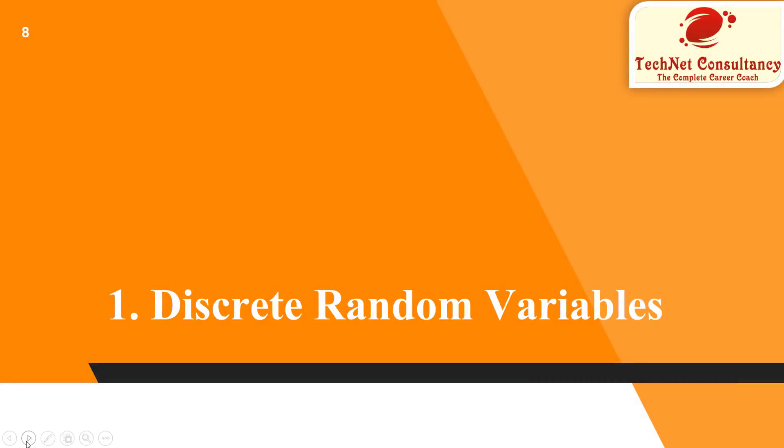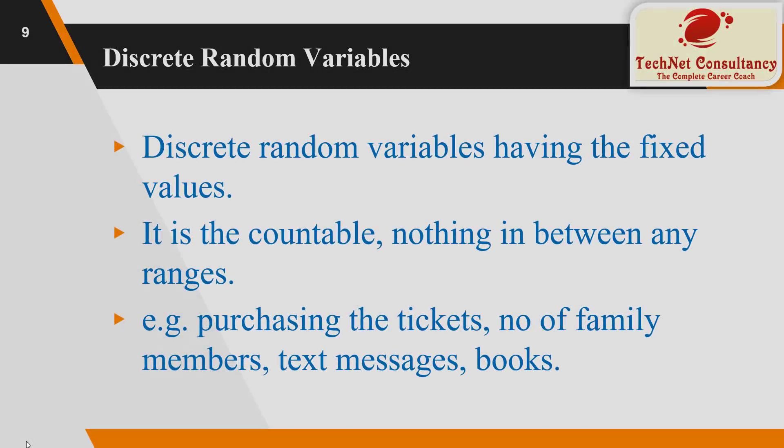Now, let's jump on discrete random variable numbers. Discrete random variable numbers have fixed values. They are countable, nothing in between any ranges. For example, purchasing tickets are discrete random variable numbers.